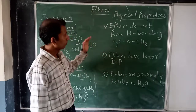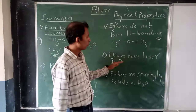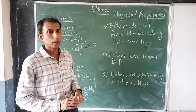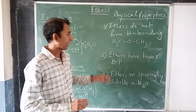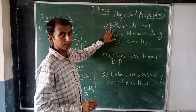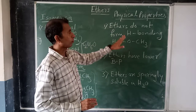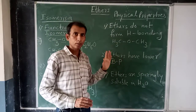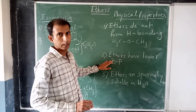Second physical property: ethers have a lower boiling point. Ethers exist in liquid state but have a lower boiling point. The reason is the same - because ethers cannot form hydrogen bonding, they have a lower boiling point.